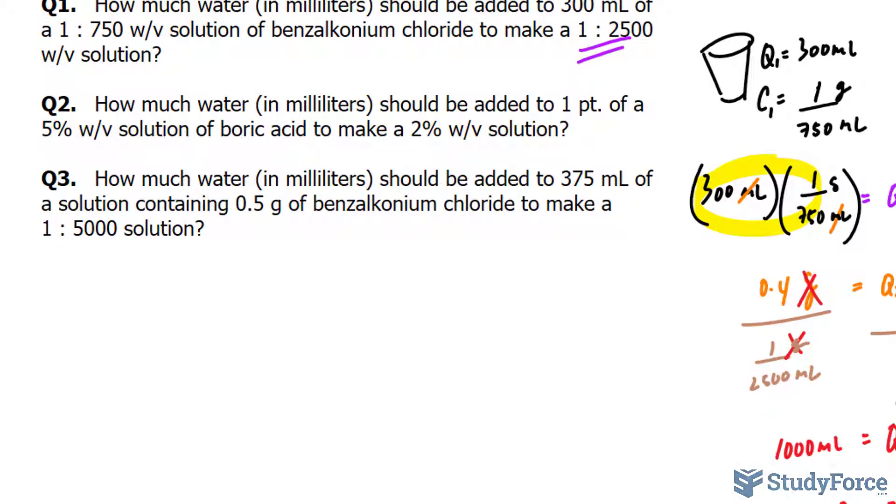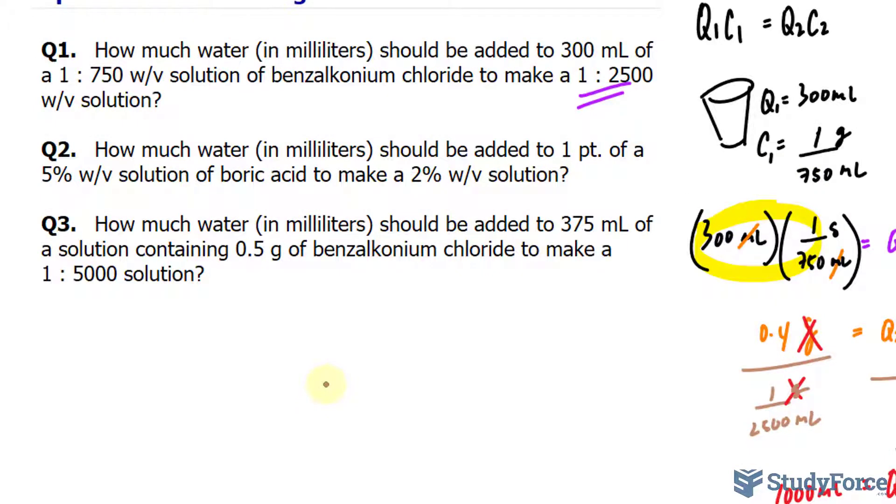How much water in milliliters should be added to one pint of 5% weight per volume solution of boric acid to make 2% weight per volume solution? The first thing you'll notice is that the units are different than what you saw in question number one. If we're dealing with pints here, which is an imperial unit, I want to go ahead and convert one pint into milliliters. So one pint is equivalent to 473 milliliters. If you're doing this in a test, you're very likely to get this conversion factor. So we have one pint equals 473 milliliters and I'll use this value moving forward. The 5% needs to be made into a decimal and you can make a percentage into a decimal by dividing by 100%. In this case, it should end up becoming 0.05 and it's a weight per volume.